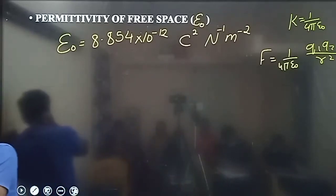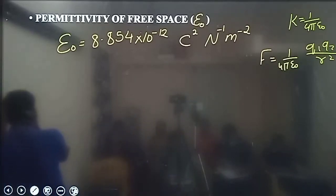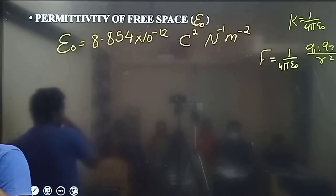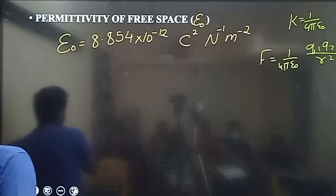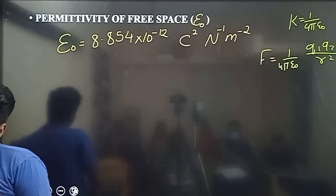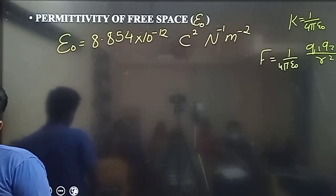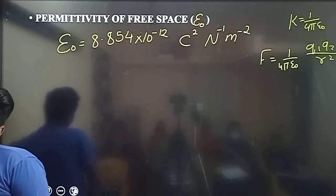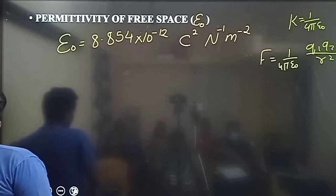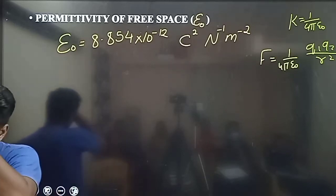The homework is dimensional analysis. The dimensions work out as: charge is A×T, Newton is M·L·T⁻², and the distance squared is L². So you divide it through and get the correct unit for epsilon naught.